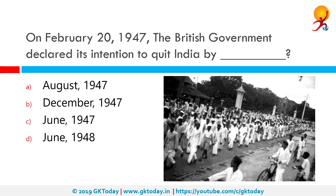The British government declared its intention to quit India by when? The correct answer is June 1948. The Prime Minister of the United Kingdom announced on 28th February 1947 that the British government would grant full self-government to British India by 30th June 1948 at the latest. The future of the Princely states would be decided after the date of the final transfer was decided.